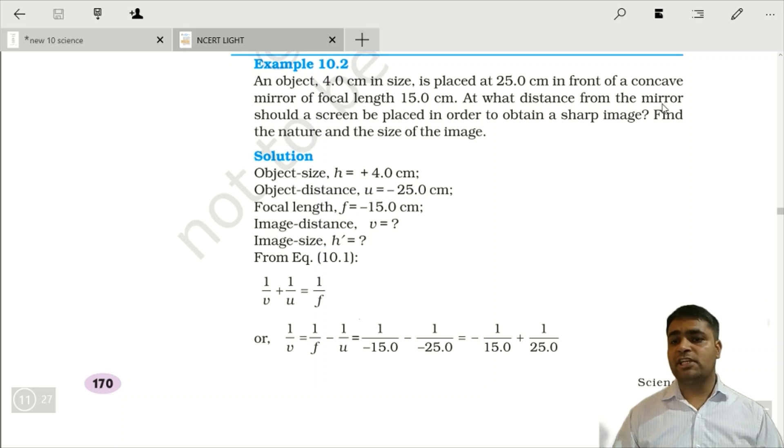Toh at what distance from the mirror should a screen be placed in order to obtain a sharp image? Toh image, joh hai humein, ek screen pe lena hai, aisa humein woh kahan pe screen rakhein, jisse ki sharp image ban jahe, us screen pe. Toh uske liye humein kya nikalna padega? Image distance. Find the nature and the size of the image, or humein kya find out karna hai? Ek toh image distance find out karna hai, or phir uska nature batana hai, or size of the image batana hai.